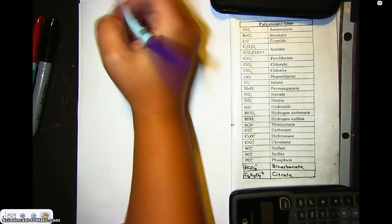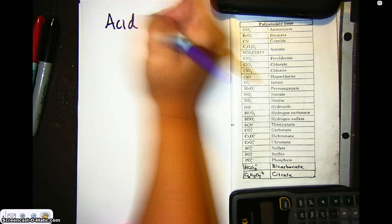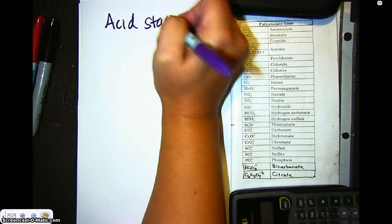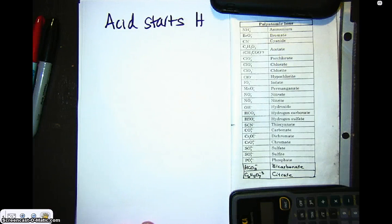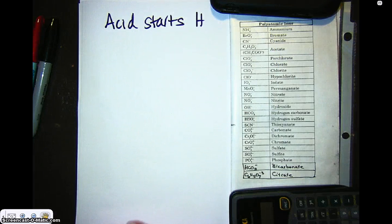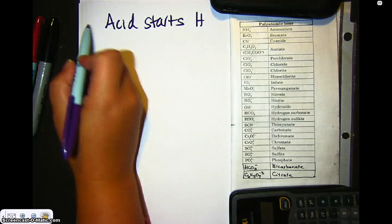An acid always starts with hydrogen. So anytime you see a formula that starts with an H, you know that it is some sort of acid.